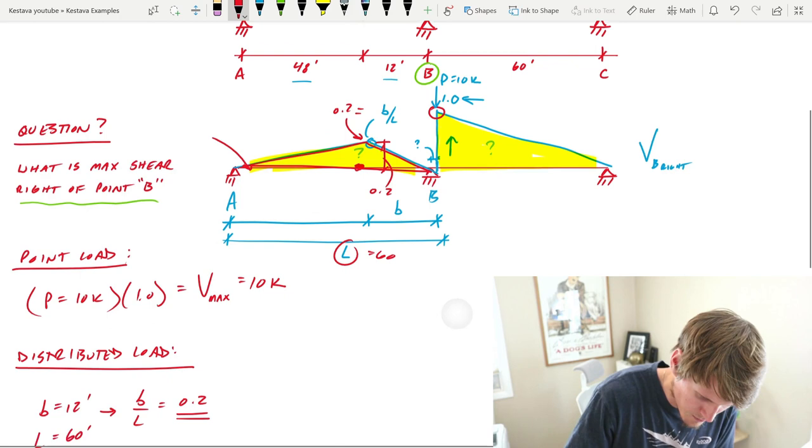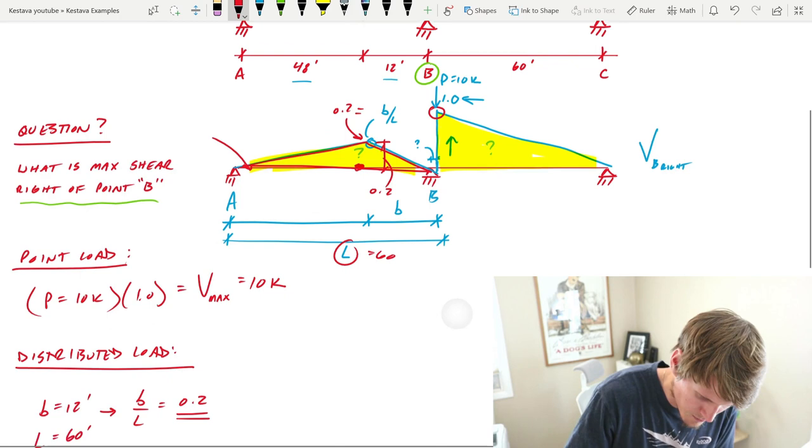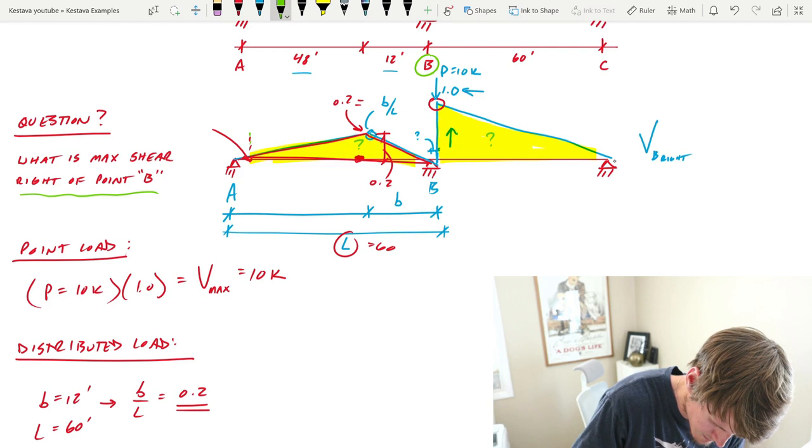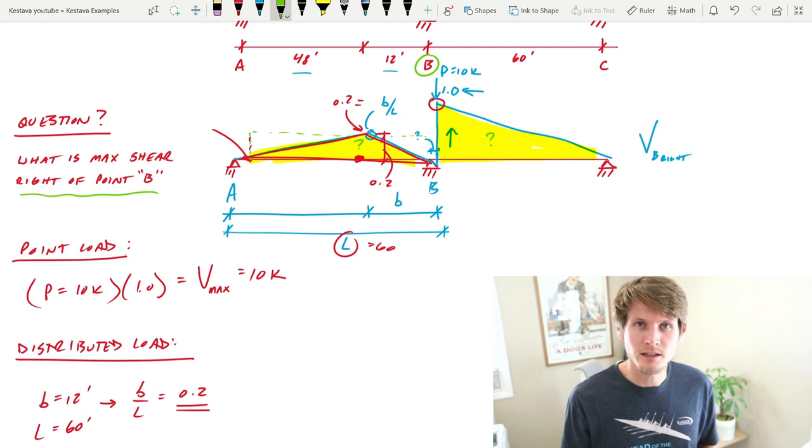Because you know that this height is 0.2 and you know that this length is equal to 60.